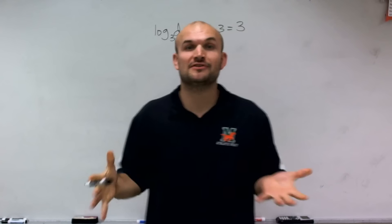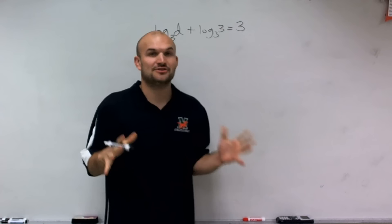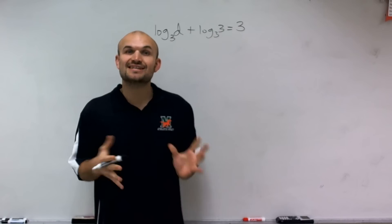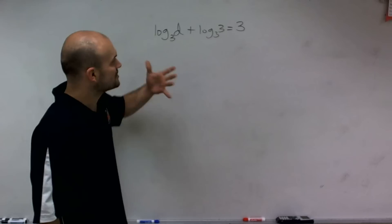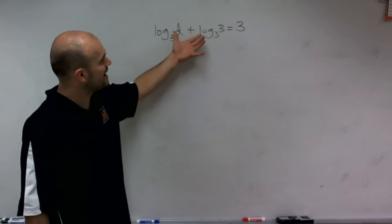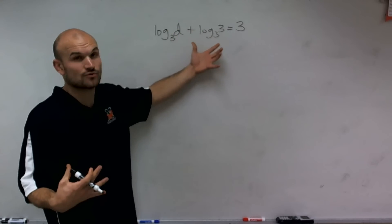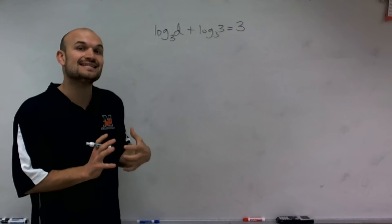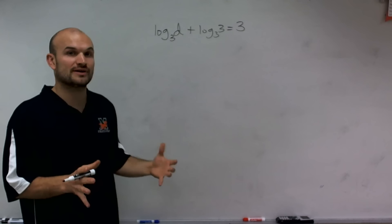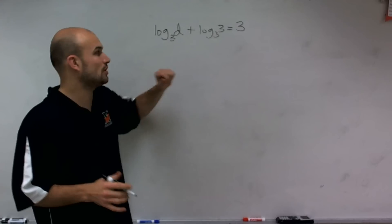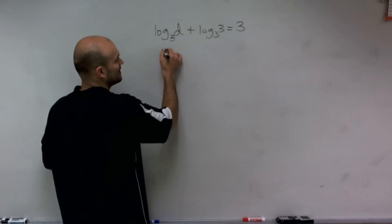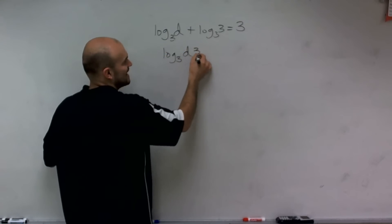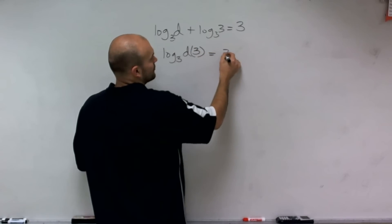Whenever we have multiple logarithms, the first thing I always want to look into is using our properties of logarithms to try to condense or simplify the equation. The product rule of logarithms states that if I have the addition of two logarithms with the exact same base, I can condense them down to a single logarithm of the product of those two logarithms. So I can rewrite this as log base 3 of d times 3 equals 3.